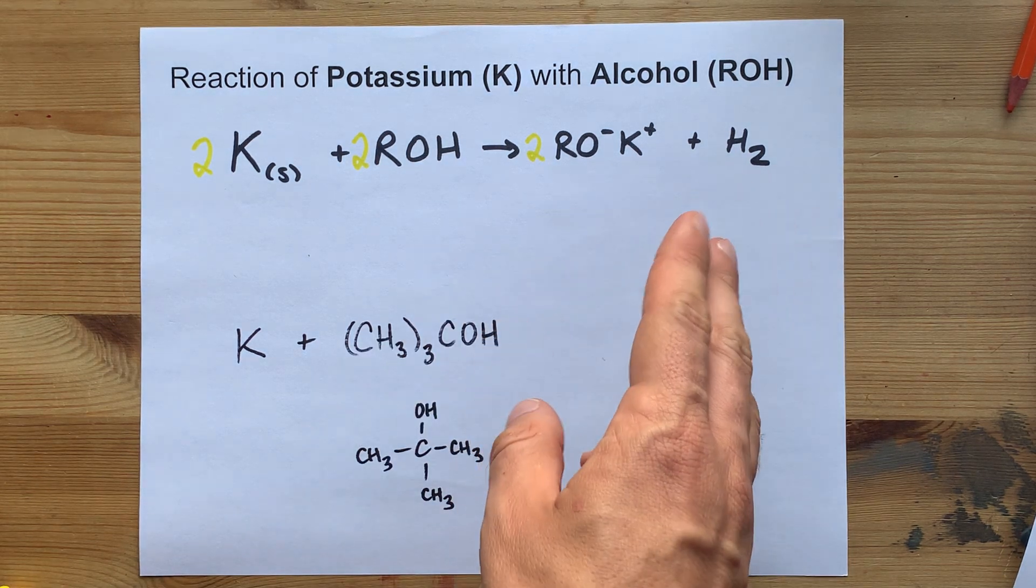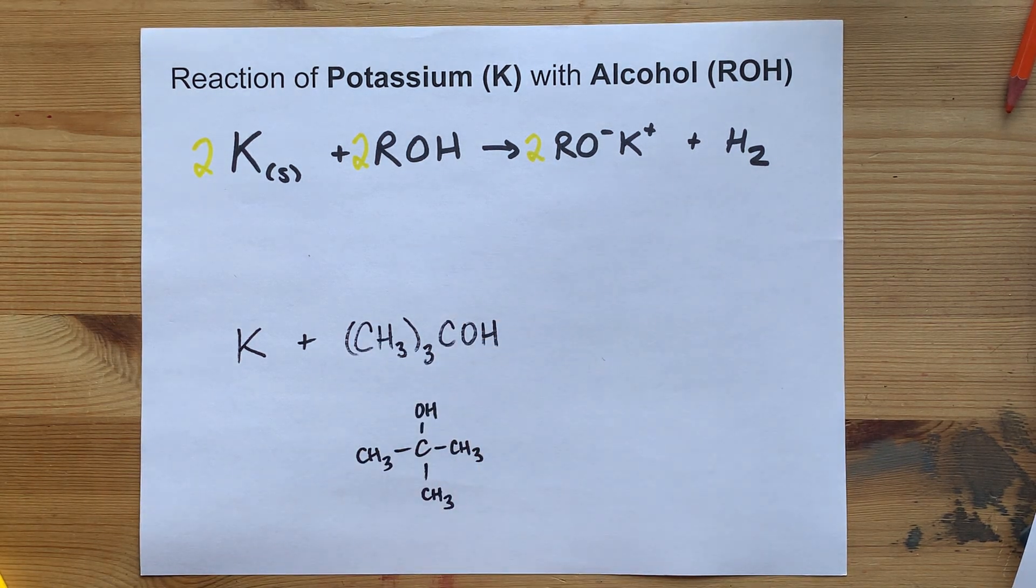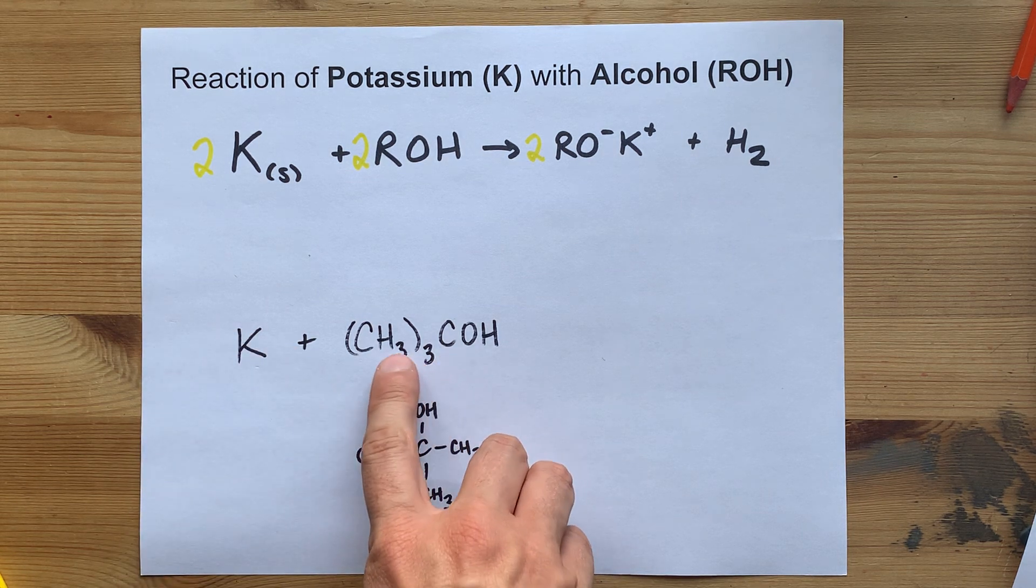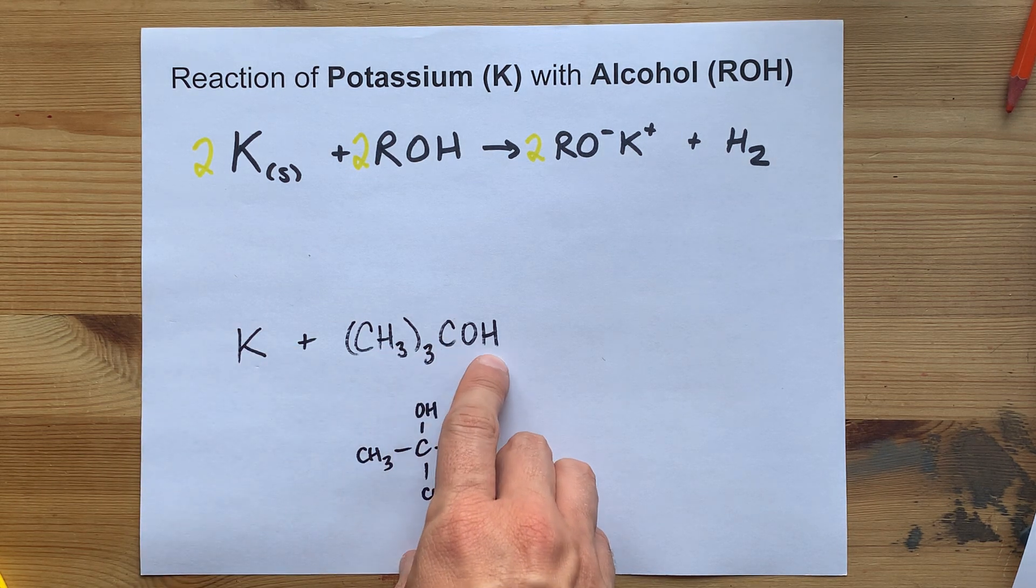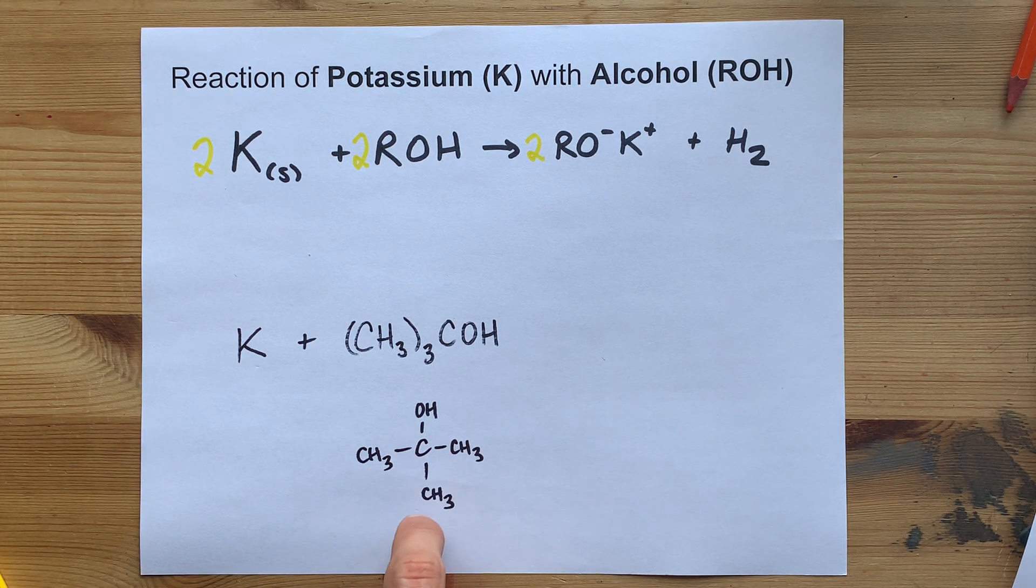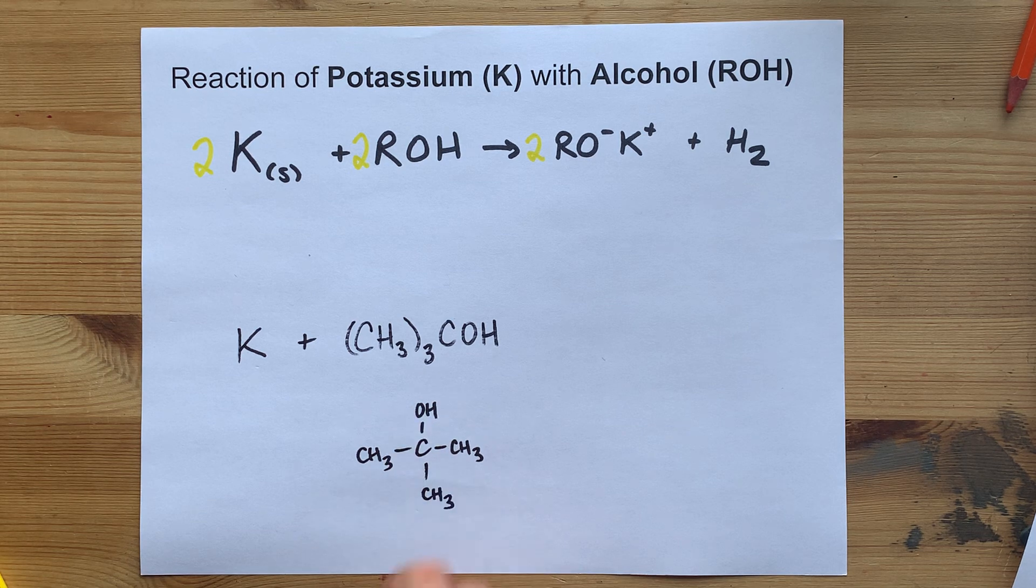The most common application of this in organic chemistry is potassium with, what is this, dimethylpropanol or something like that? Wait, I can name this better. That's 2-methylpropan-2-ol.